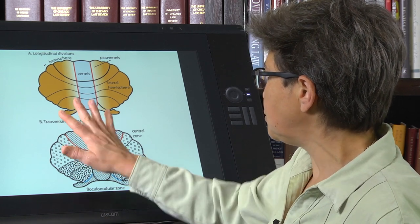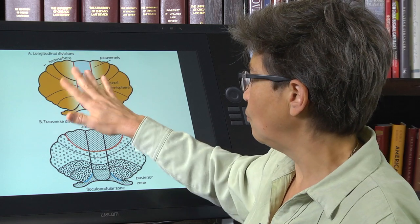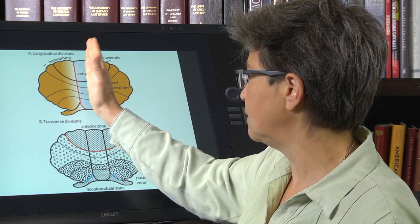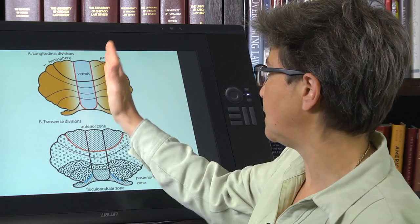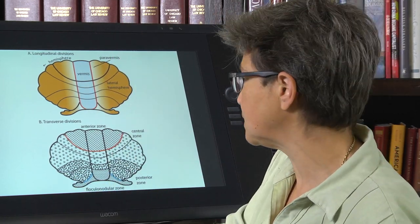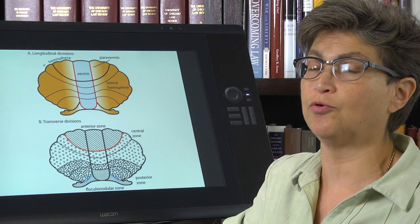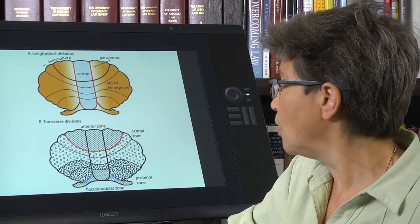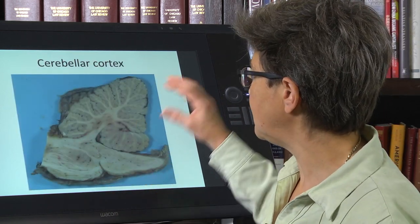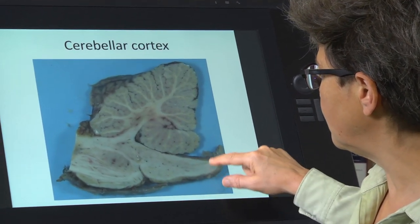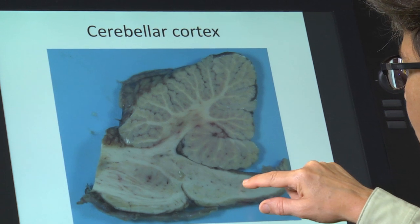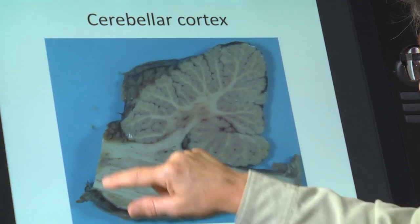So, in addition to this topography, where there's a midline of the cerebellum is going to deal with midline movements and paravermis is going to deal with appendicular movements, there is also a structure to the cerebellum, and we can see it here. If you zoom in here, what you see is the spinal cord back here, the medulla, the pons.